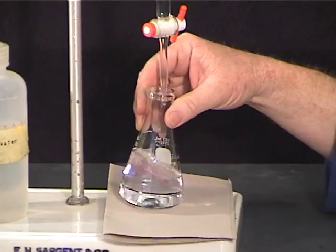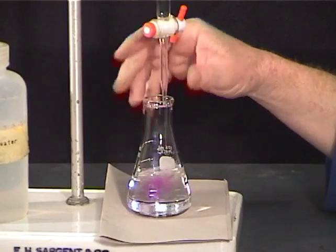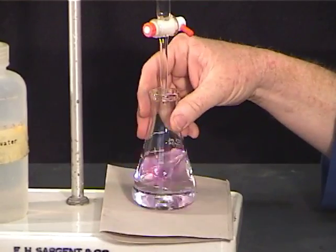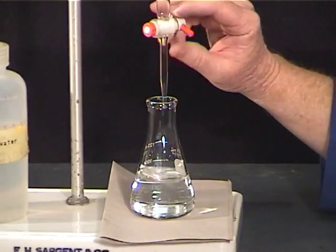Slow down the titration when the color change becomes more pervasive and begins to linger throughout the flask. Add the titrant dropwise at the end.